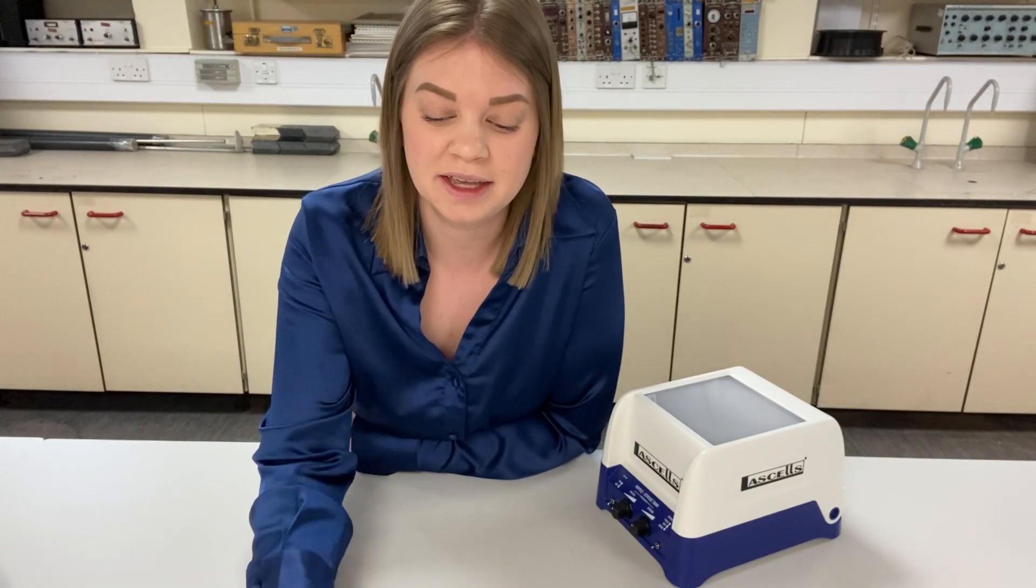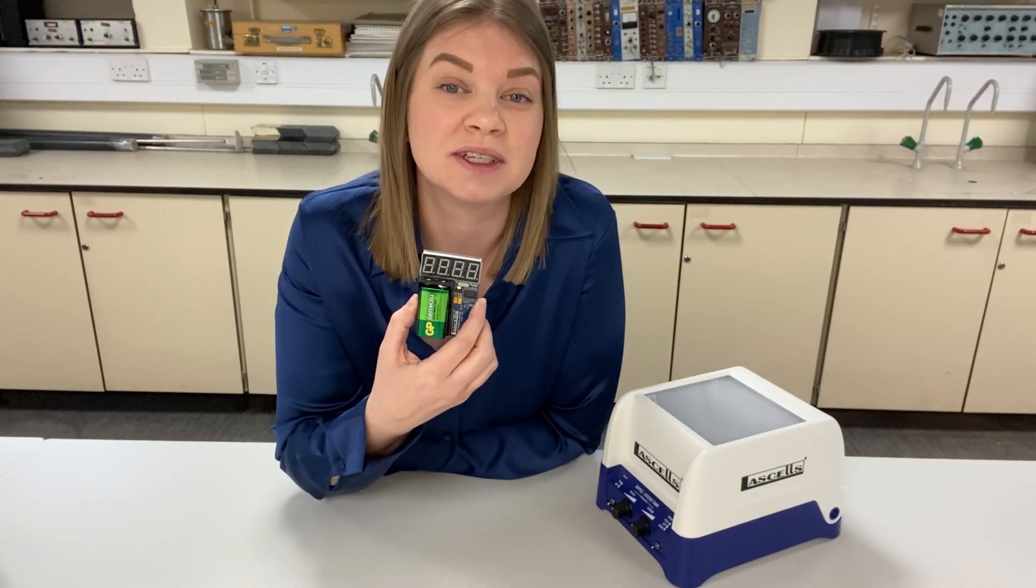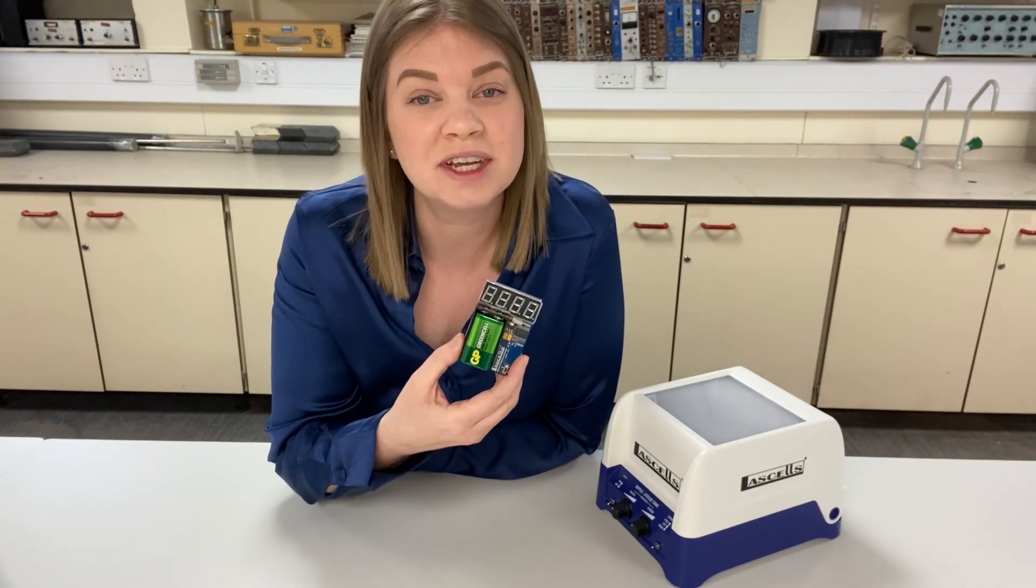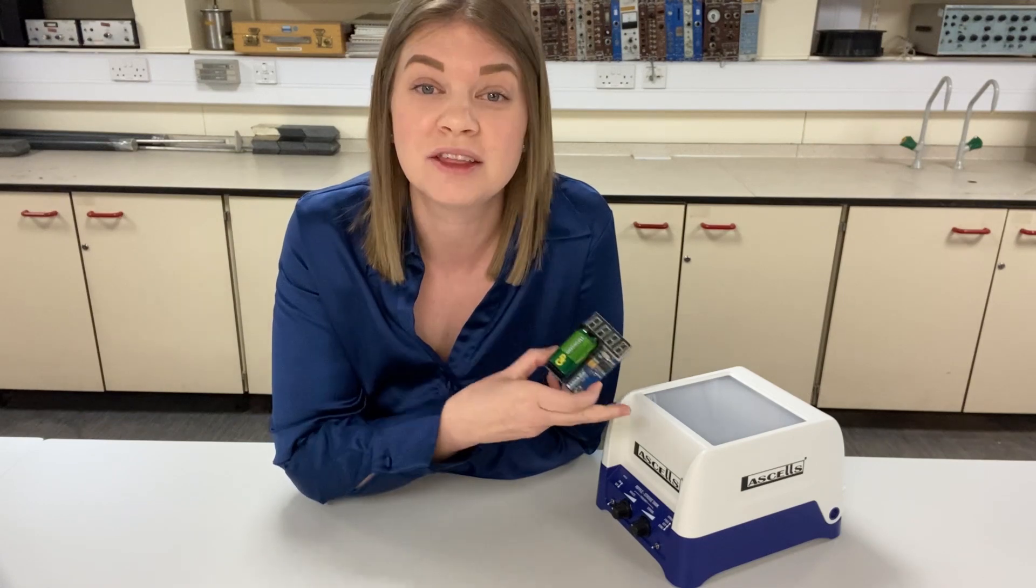When you do it this way you can sense check the value that you calculate for frequency using this, the strobe counter. This device will give you an accurate readout in hertz of the frequency that the ripple tank is running at. By being able to sense check that value will give your students the opportunity to get that positive reinforcement that the method that they've done is correct, or worst case scenario that something's gone a bit wrong and they might have to try it again. That video will be dropping next week so don't forget to subscribe so that you don't miss out. Thanks for watching.